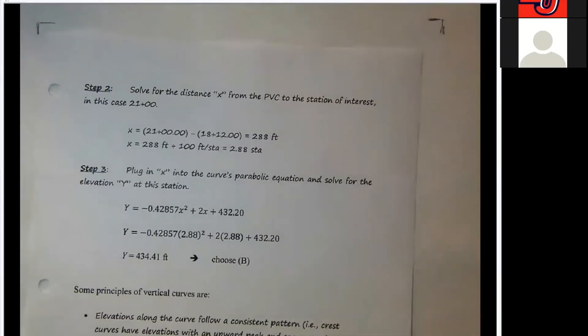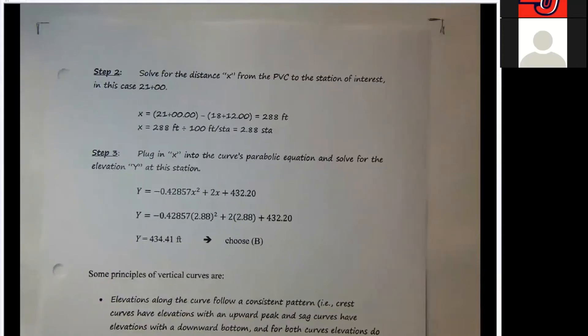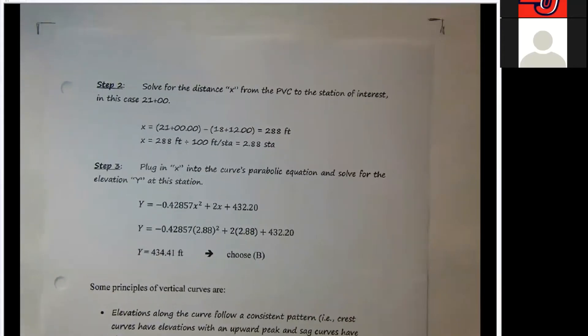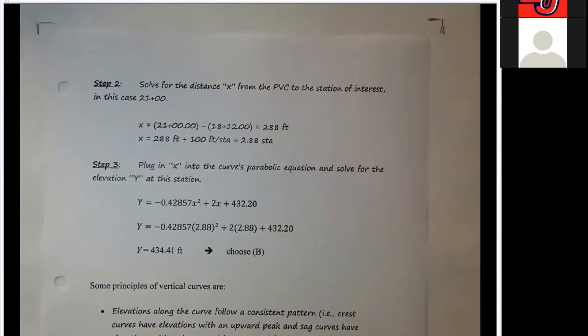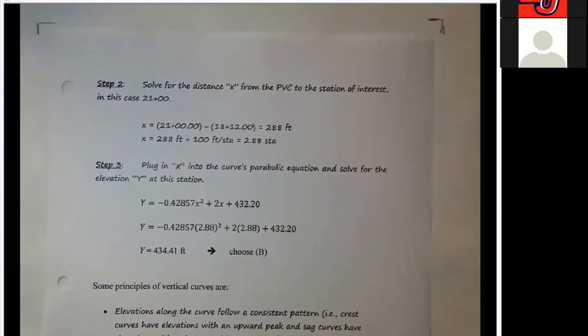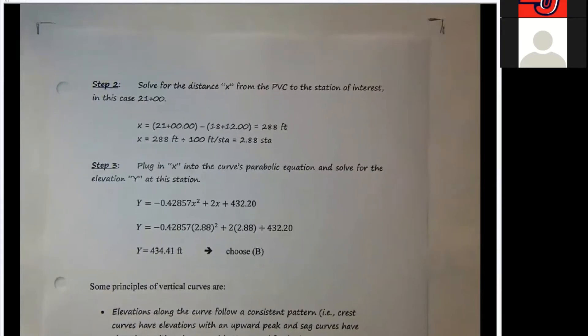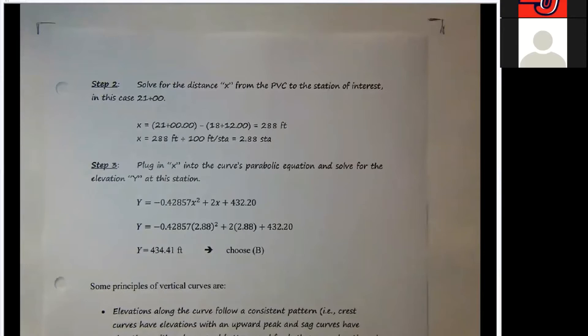So this is the first part, and then the second part is the elevation at station 21 plus 00. This is another thing where stationing is really established with our horizontal alignment. It's not established. The vertical alignment is just a match that goes with the horizontal alignment.